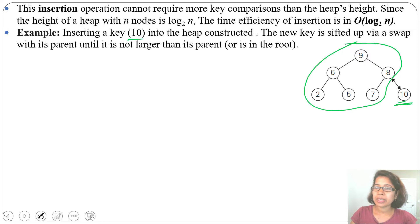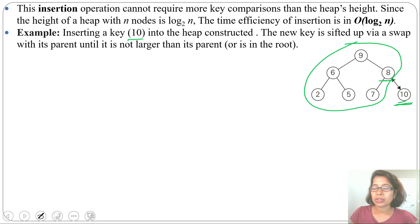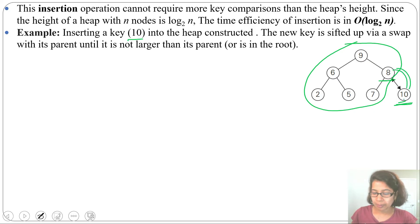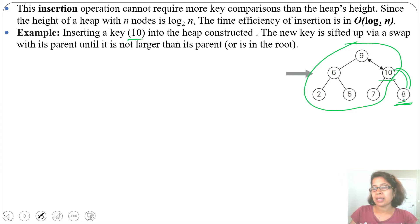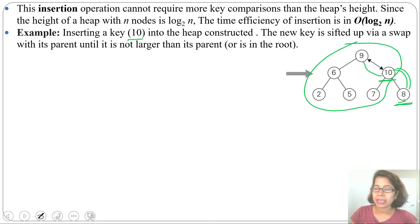We compare 10 with its parent 8. Is 10 less than 8? No — so the parental dominance property is not satisfied, and we need to swap. So 10 comes to 8's place and 8 goes to 10's place. After this swap, we compare 10 with its new parent 9.